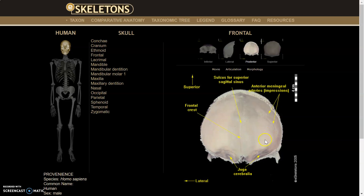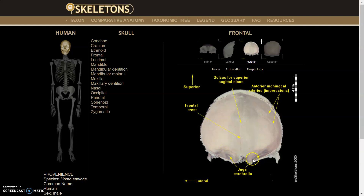In the posterior view, clicking morphology, you see the frontal crest — this basically marks where the two hemispheres of the brain are, like a sharp divot. You also see these grooves — these are the anterior meningeal arteries or meningeal grooves that you would get from the brain. You won't be tested on these kinds of details, but they're visible here.